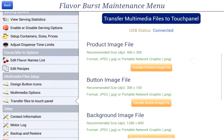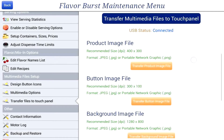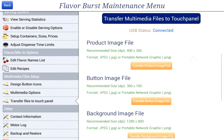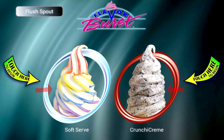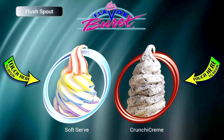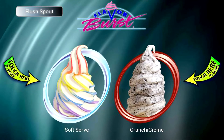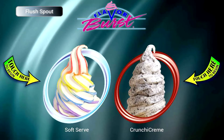The next type of file you have is the product image file. The product image files show you the type of product you are offering. The main product image shows up here. If you have two types of product connected to the touch panel, two images will show up.